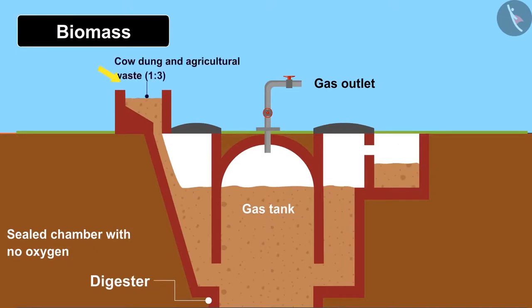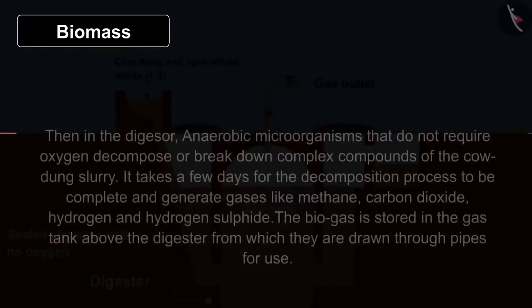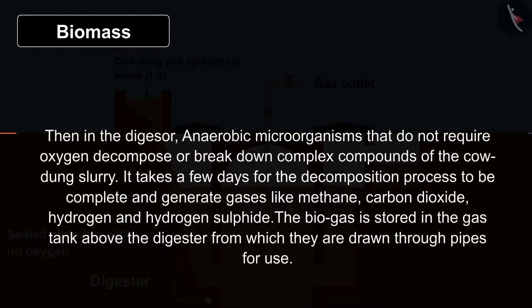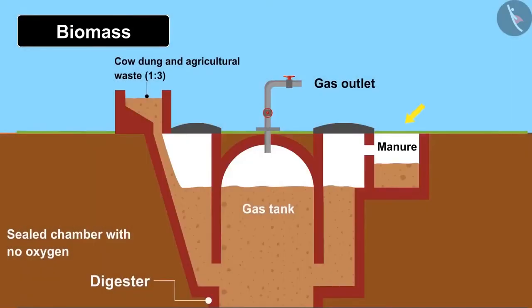Cow dung and agricultural waste are mixed with water in a ratio of 1:3 and filled into the plant. Inside the digester, anaerobic microorganisms — which do not require oxygen — decompose and break down complex compounds of the cow dung slurry. This process takes a few days and generates gases like methane, carbon dioxide, hydrogen, and hydrogen sulfide. The biogas is stored in a gas tank above the digester and drawn through pipes for use. The remaining slurry can be used as fertilizer in the fields.